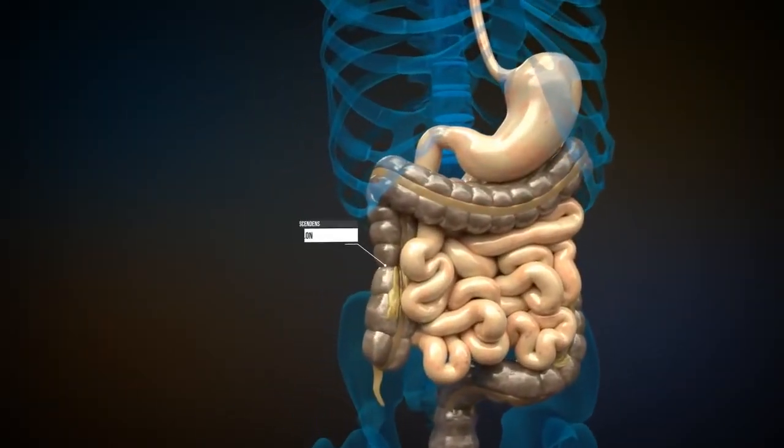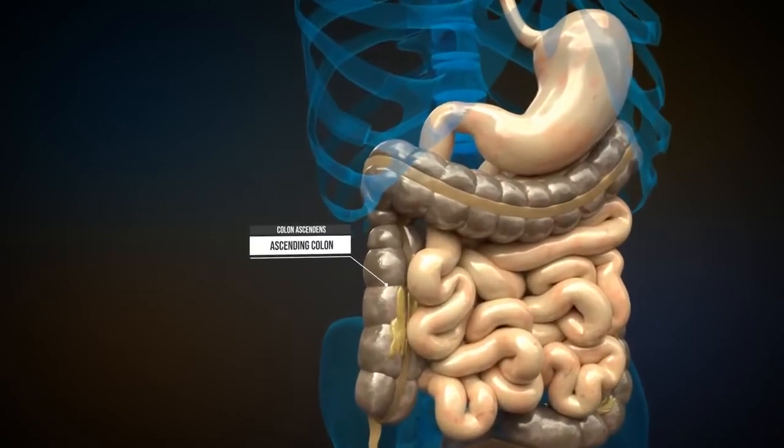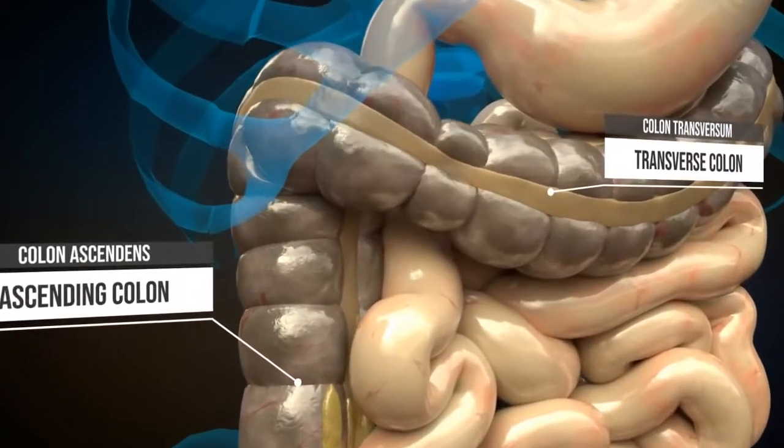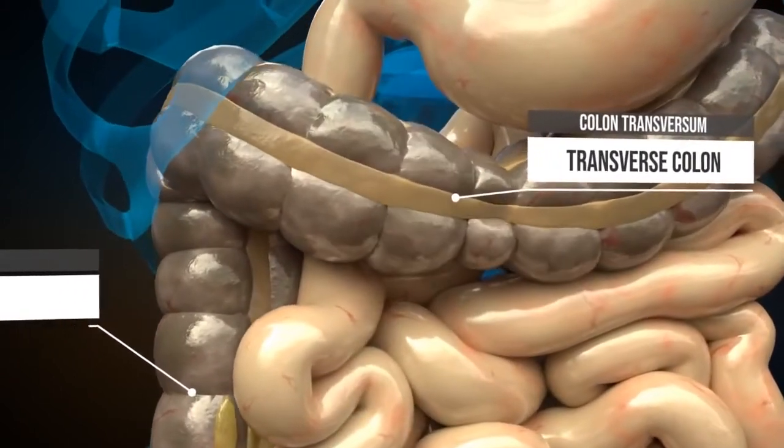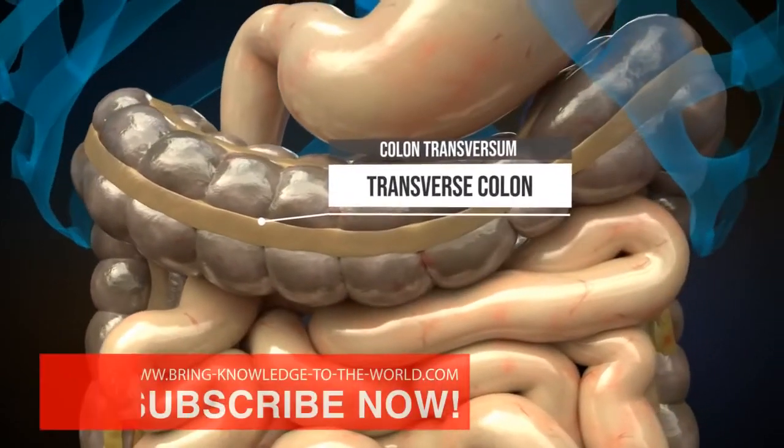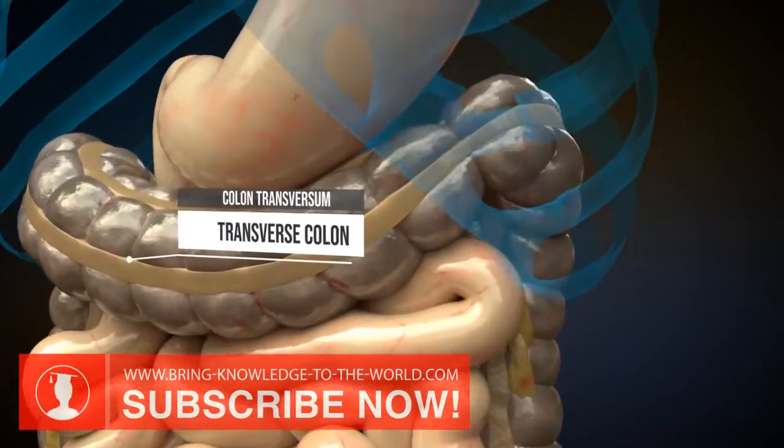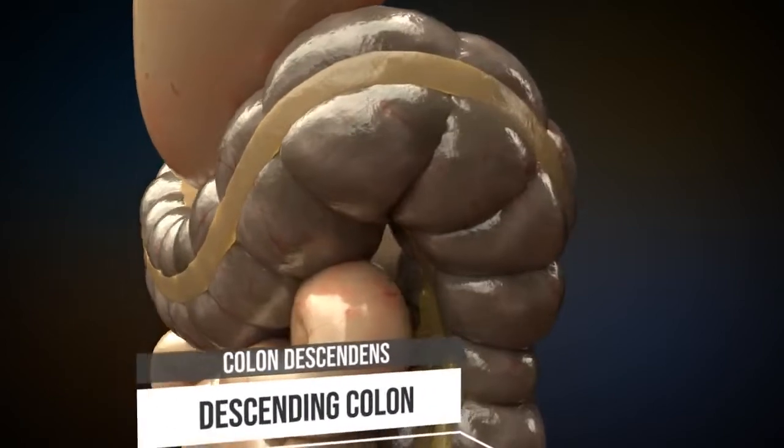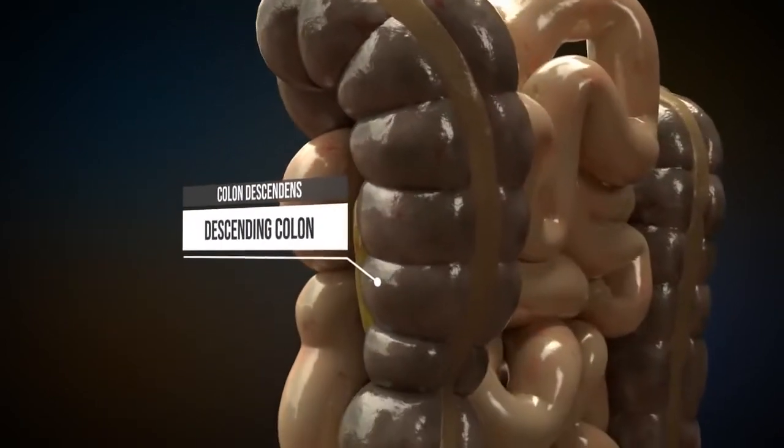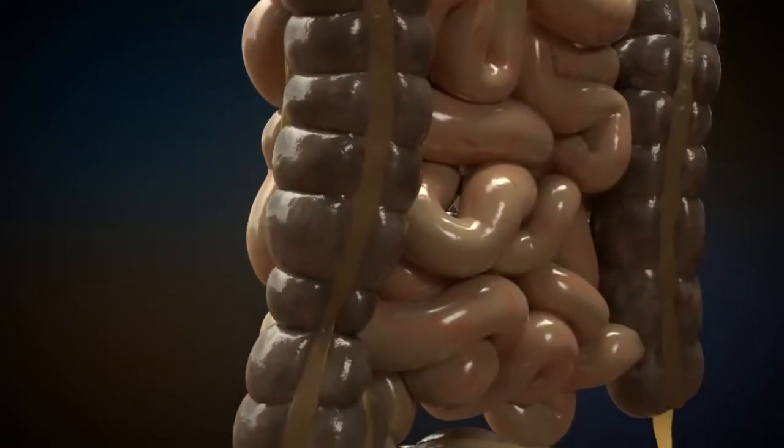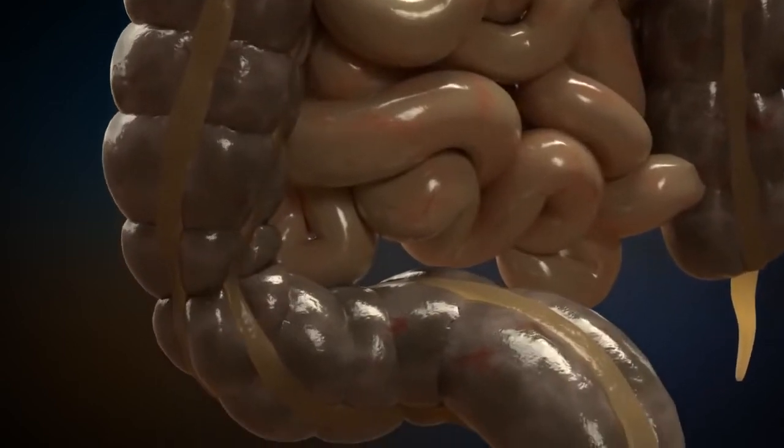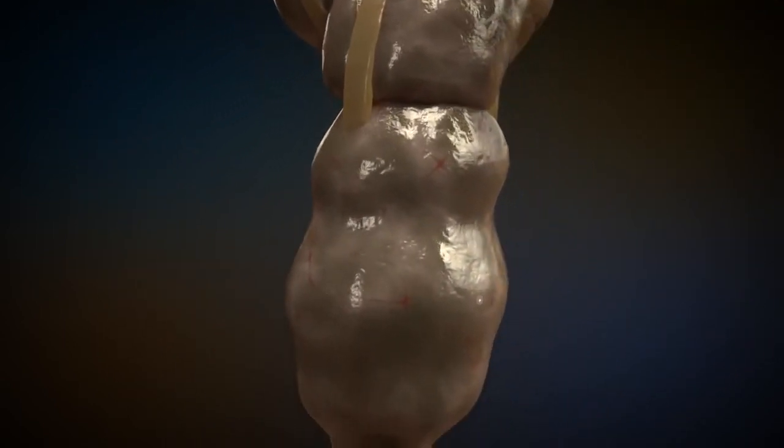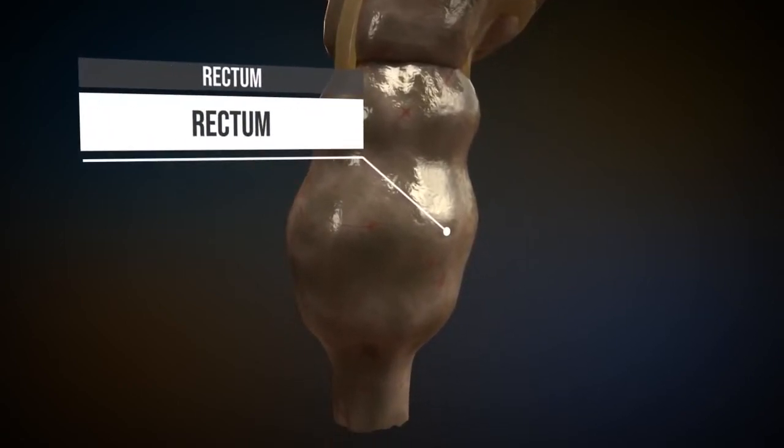Through peristalsis, the chyme is transported from the ascending colon to the transverse colon to the descending colon. On its way through the large intestine, water is removed from the chyme. Furthermore, mucus is added for proper excretion of waste. Substances that cannot be absorbed through the small intestine or the large intestine remain in the rectum and are finally excreted through the anus.